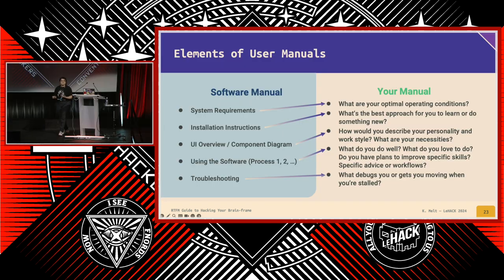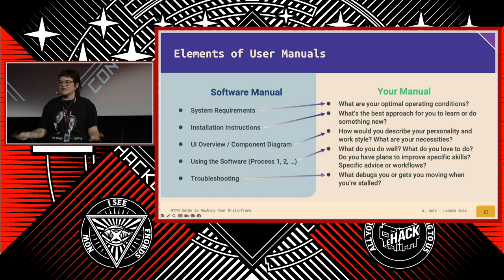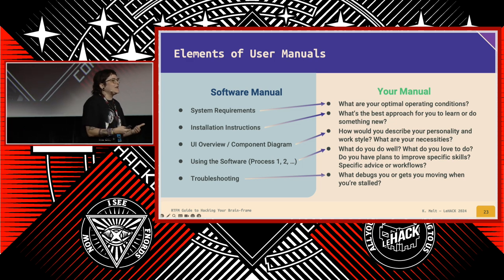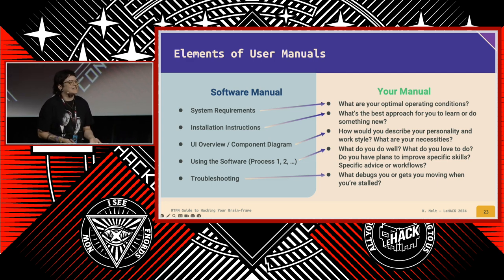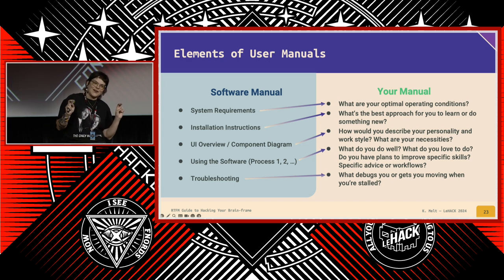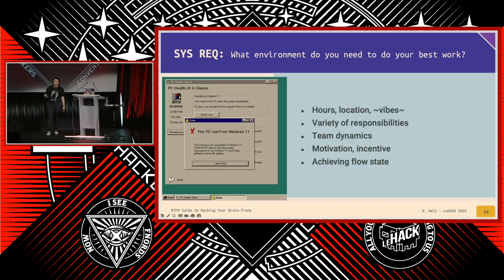Most user manuals — I've focused mostly on a software manual — have five components. You have your system requirements: what are your optimal operating conditions? How do you best install yourself into a new situation? What does your component diagram look like — what are you made up of, what is your personality? What are some key highlighted experiences? Do you have specific skills? How are you best used? Do you have specific quests, things you'd like to learn or experience? And most importantly, what debugs you when you're stalled out?